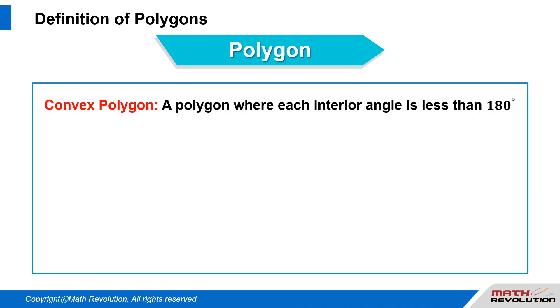Definition of Convex Polygon: A polygon where each interior angle is less than 180 degrees.